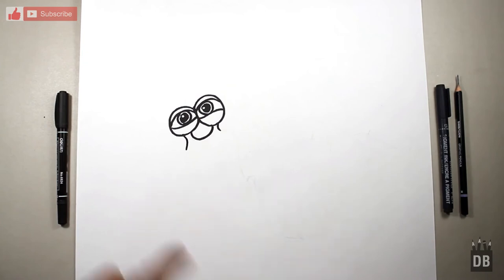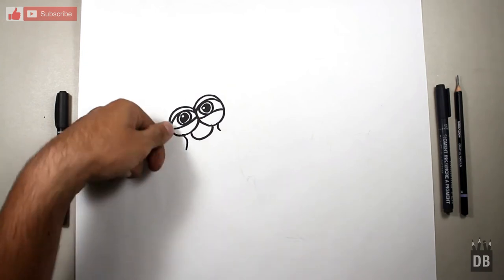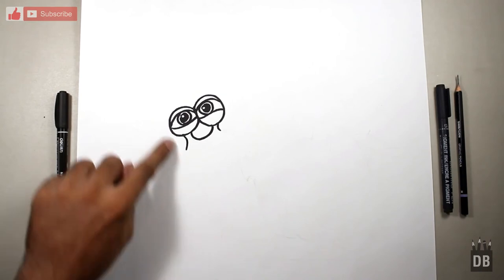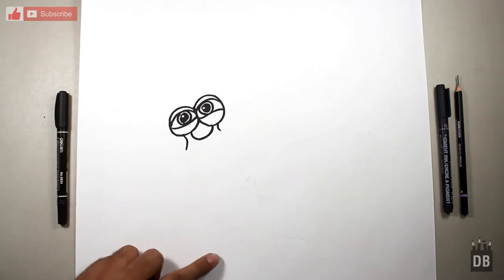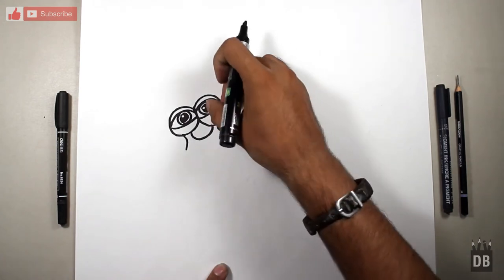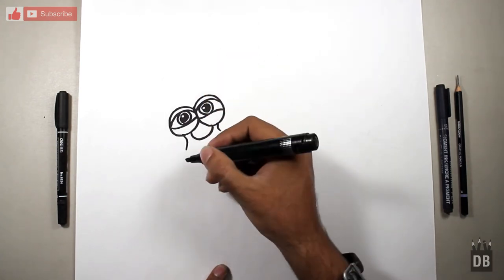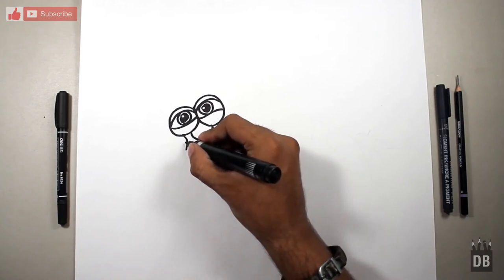Now we are going to make the body. The body is in diagonal shape like this. The body will end up with the center of the eyes to the center of the eyes and it's in an S shape.